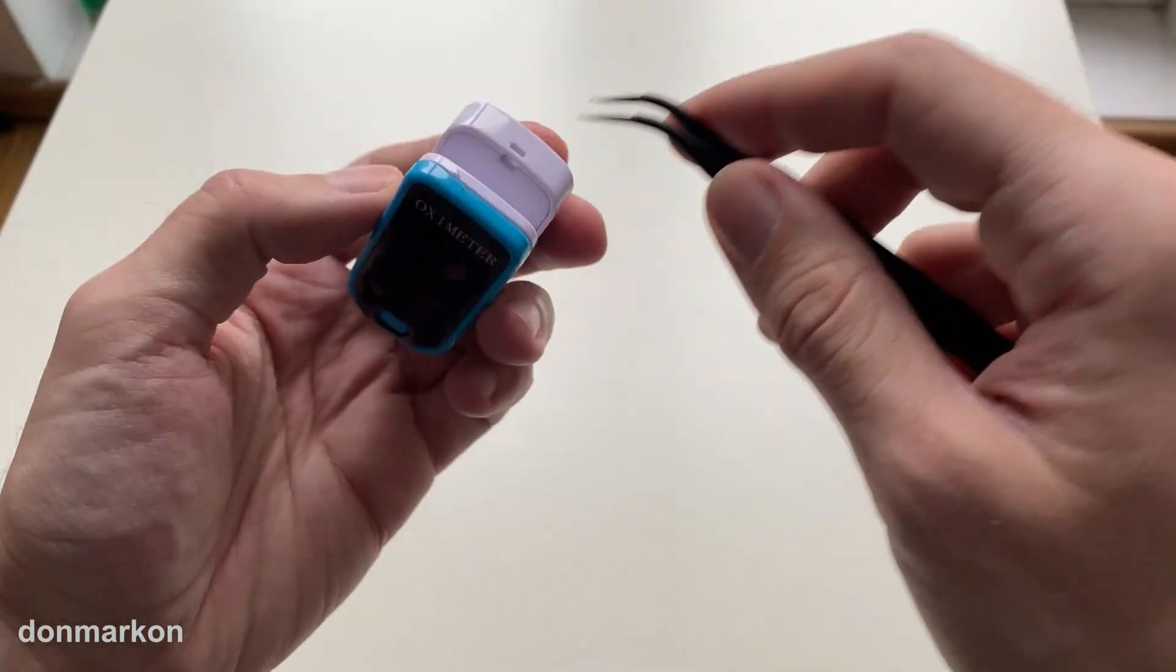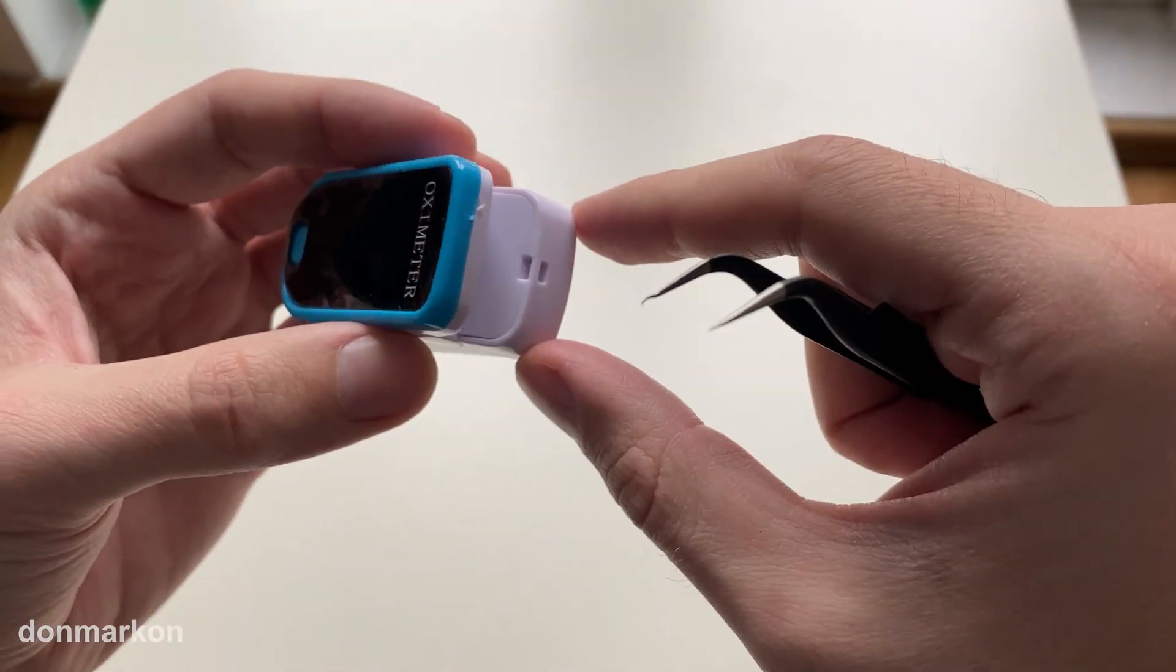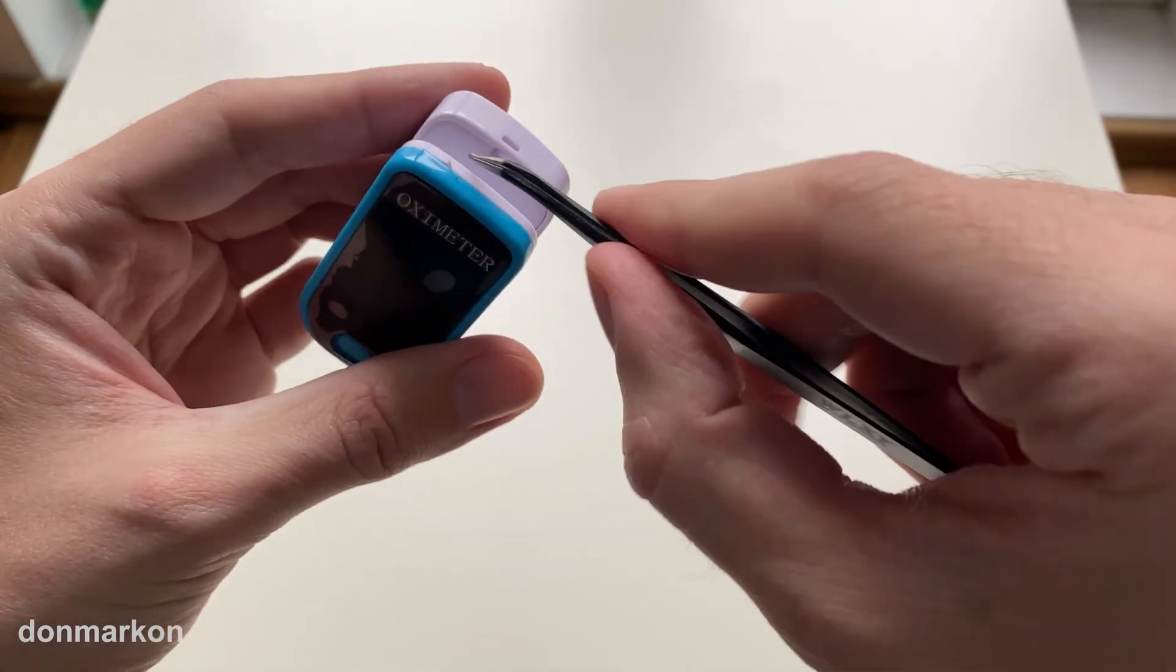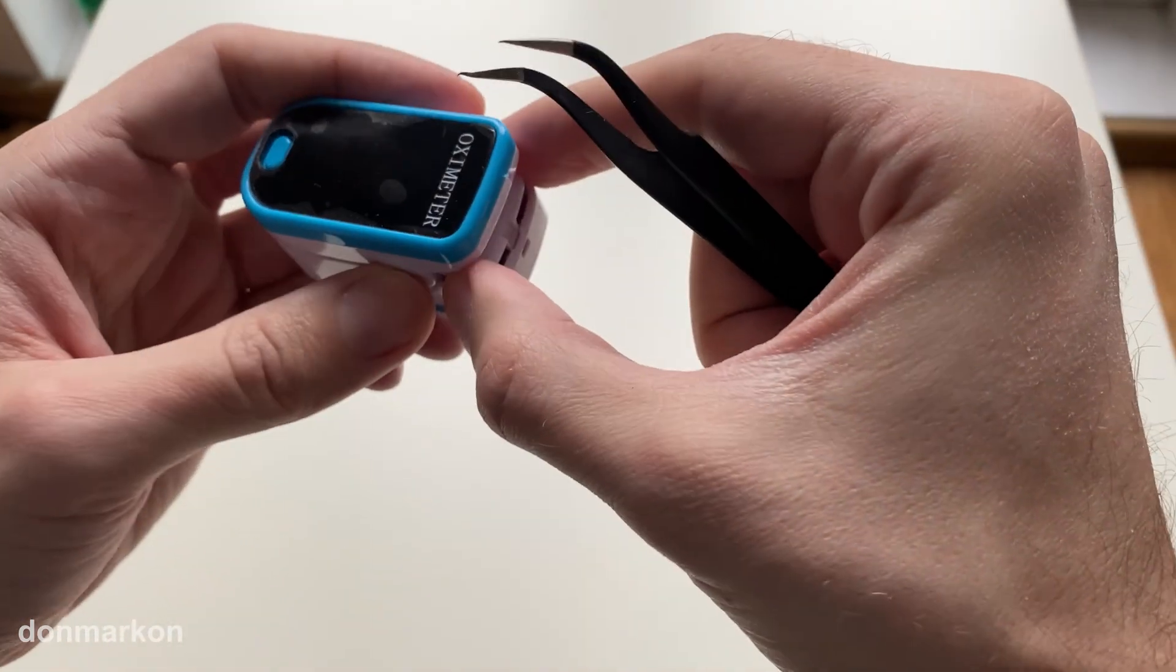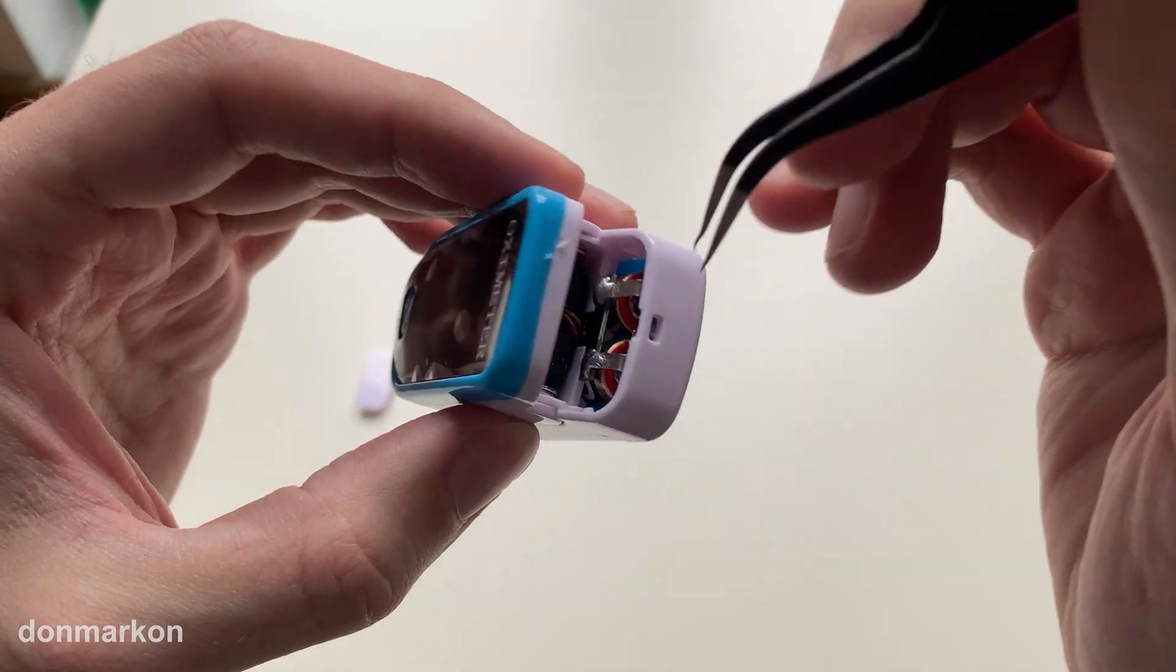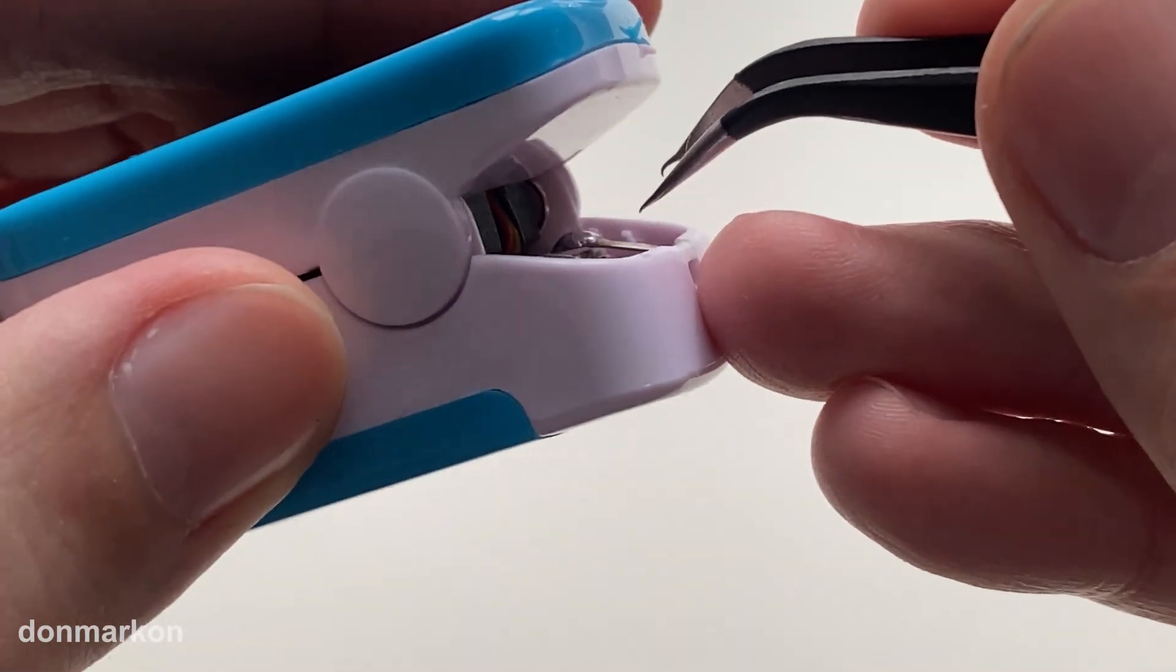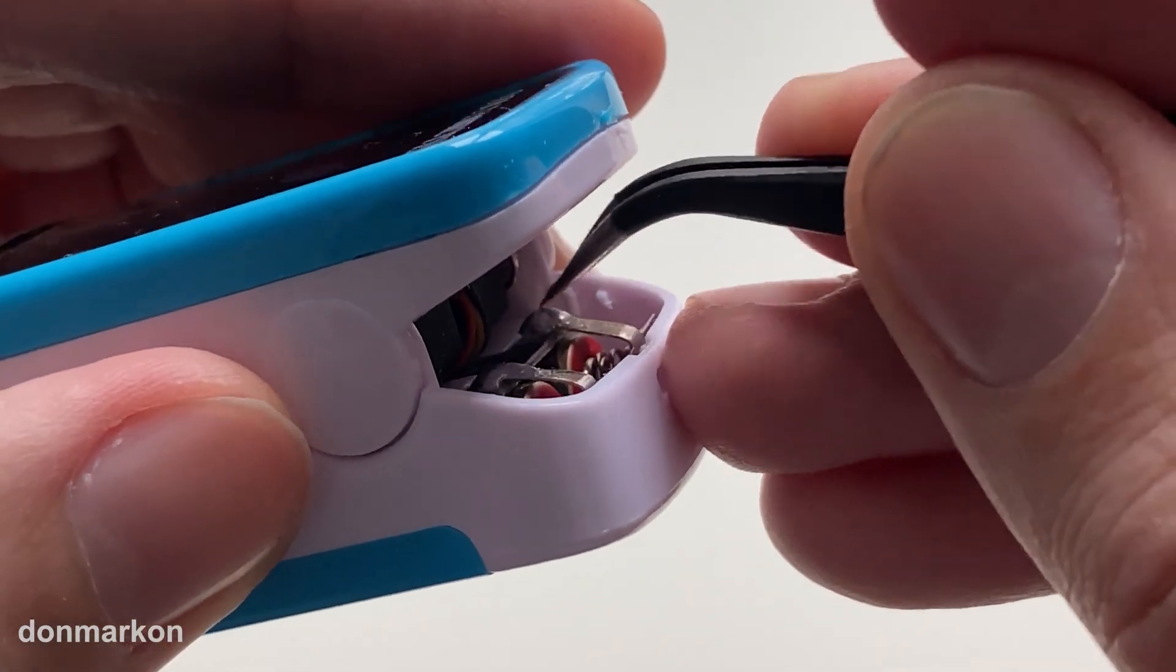Usually there is a compartment like this on the bottom side. When you open it, you can see the solders, and as you can see, the right one is losing contact.